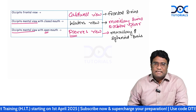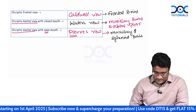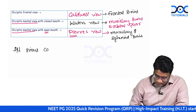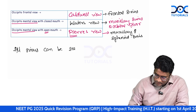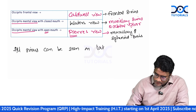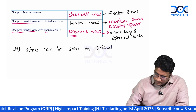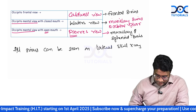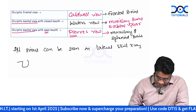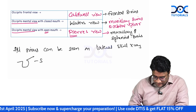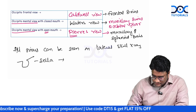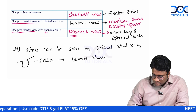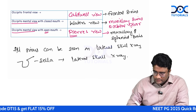Remember, all sinuses can be seen on a lateral skull radiograph. The lateral skull x-ray is also the best view to look at the sella turcica.